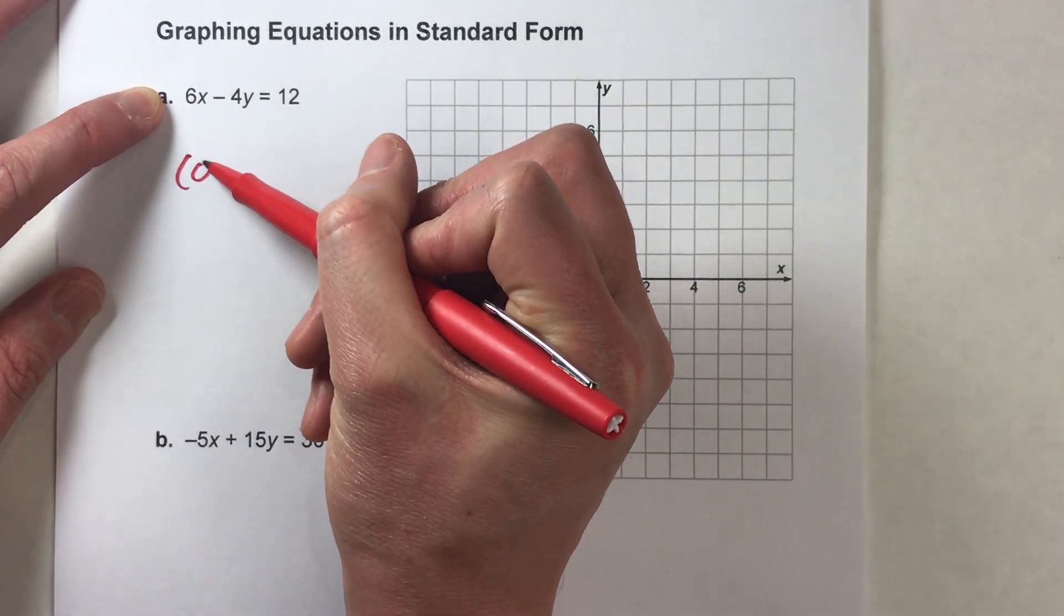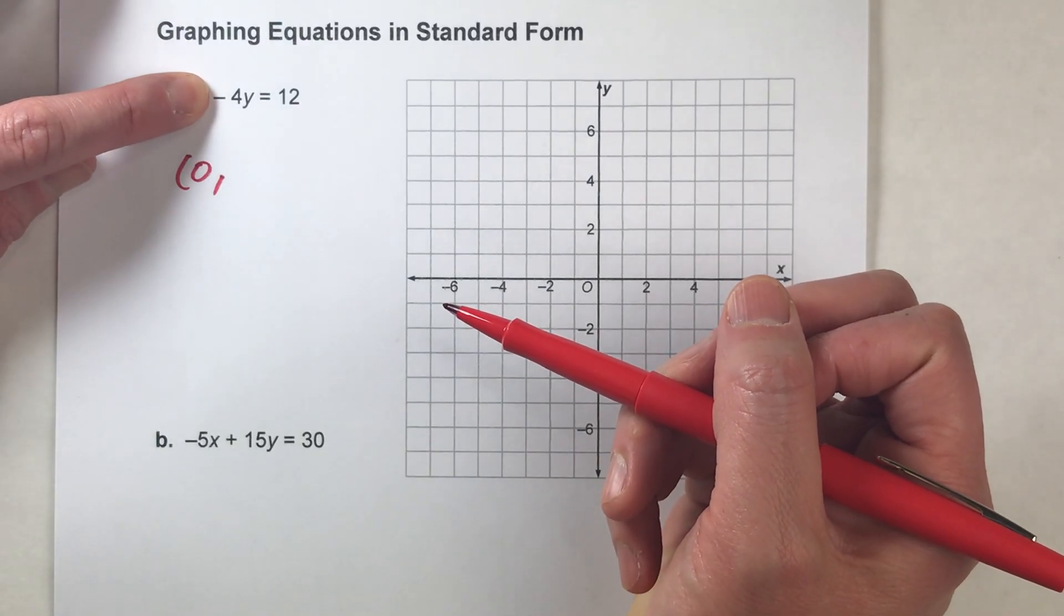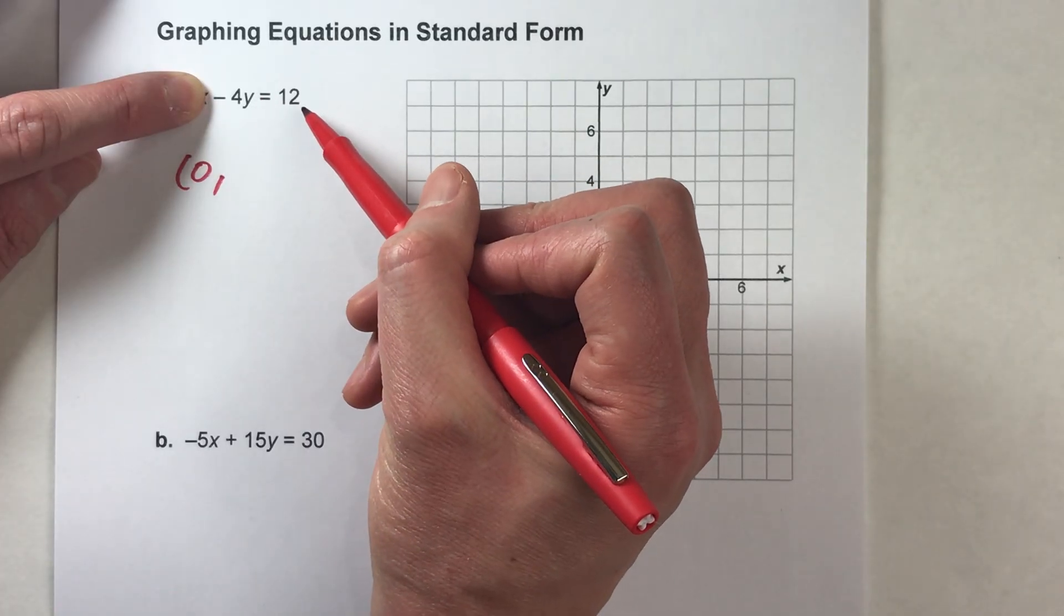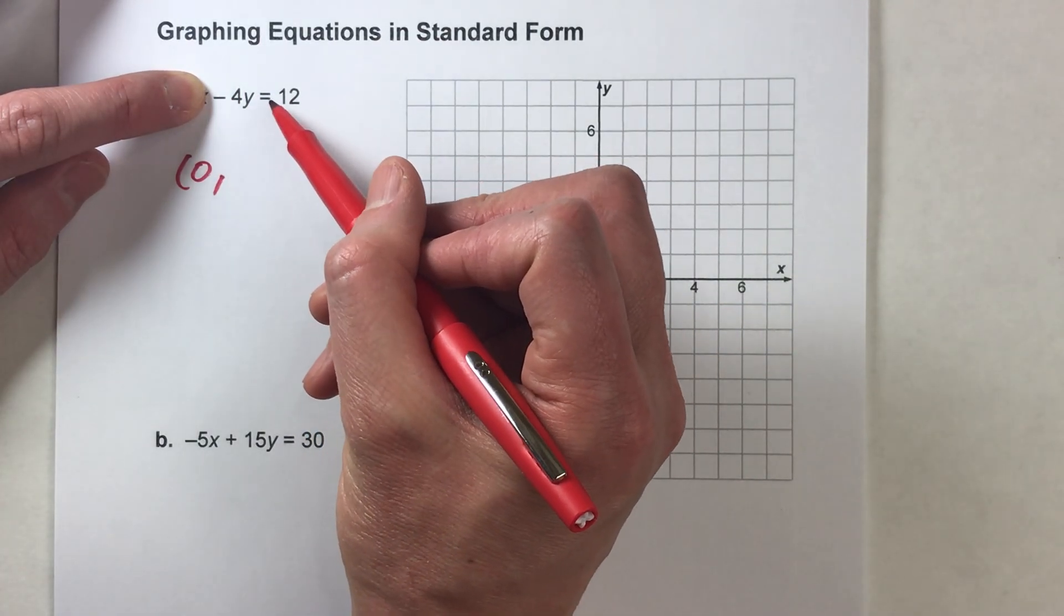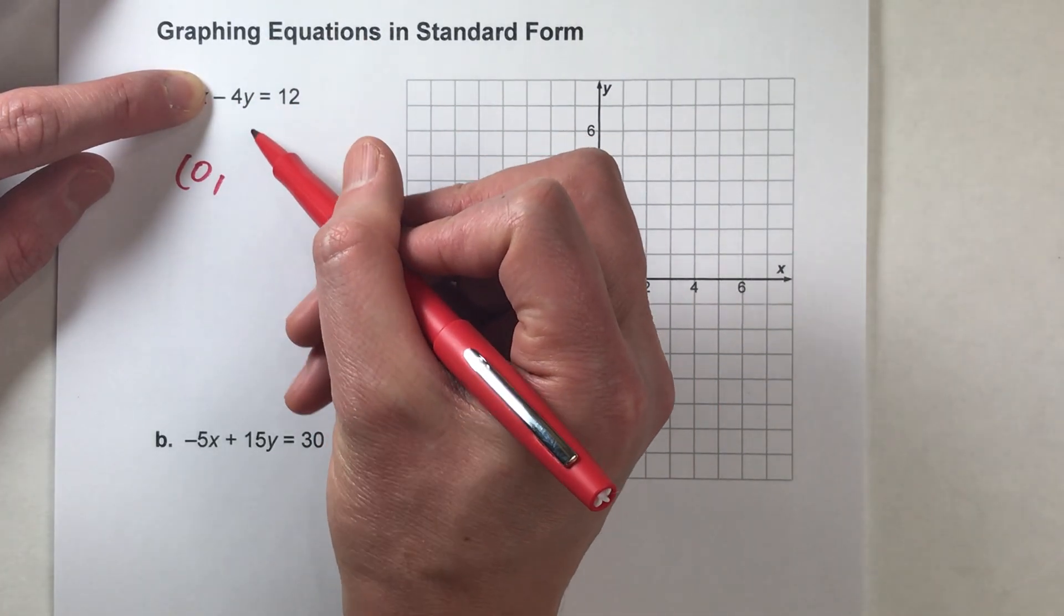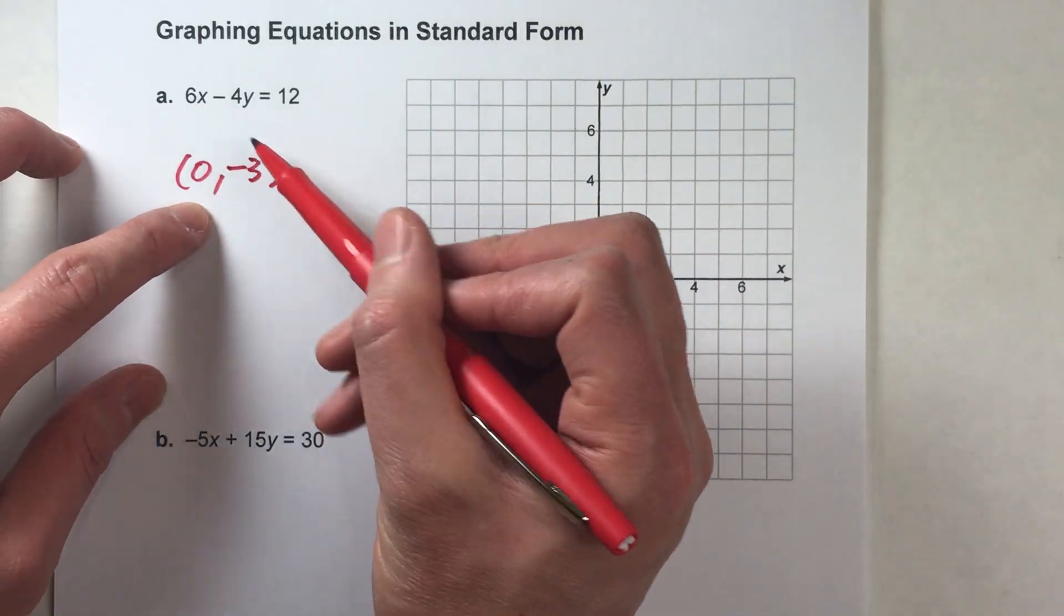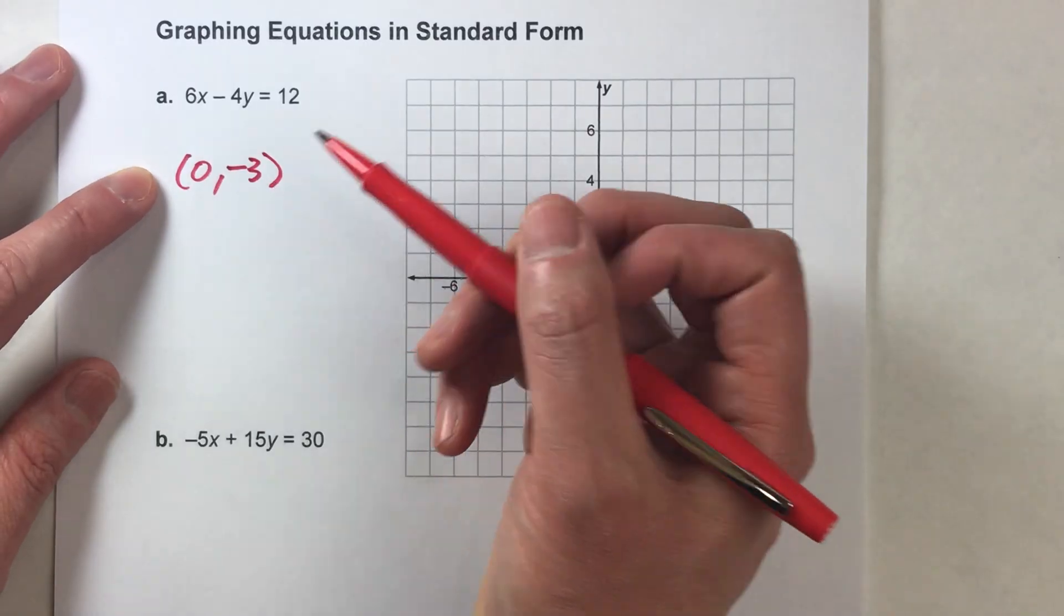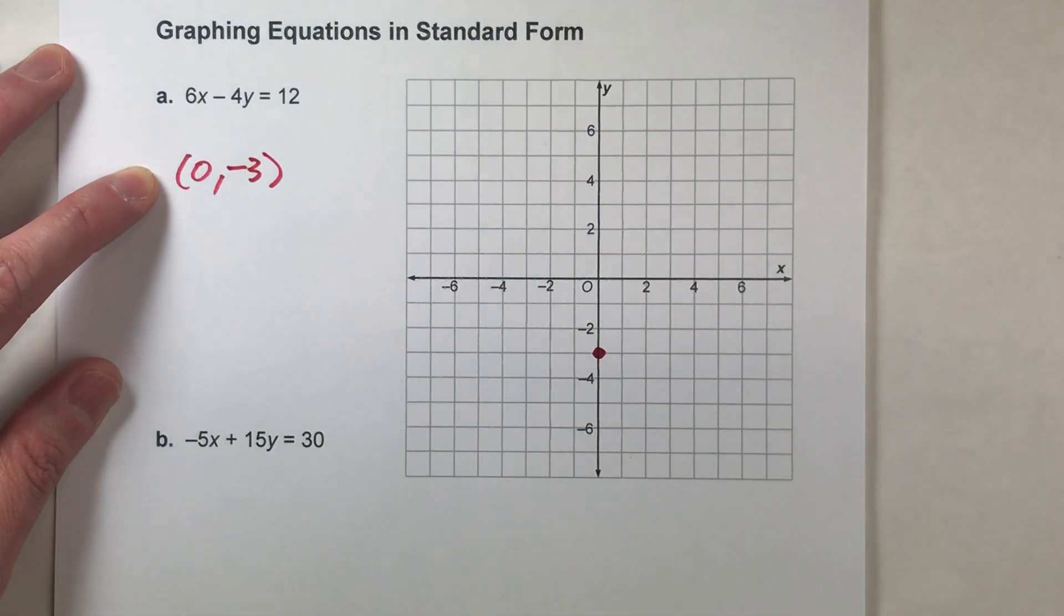Pretend x is zero. That means six times zero would be zero. So we're left with negative four times y equals 12. What value of y would work so that negative four times y equals 12? Well, negative four times negative three is equal to 12. So y must be negative three. So the combination of x being zero and y being negative three makes this side equal 12. So that's a point on our line. And if I plot that, zero, negative three, that's my y intercept.